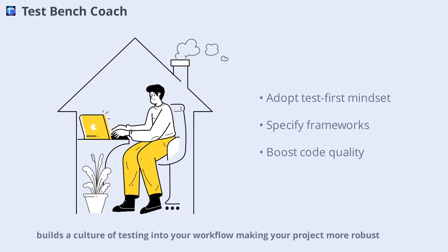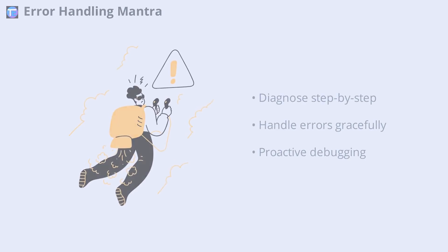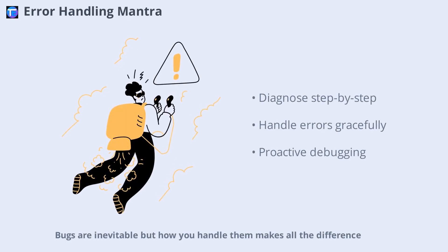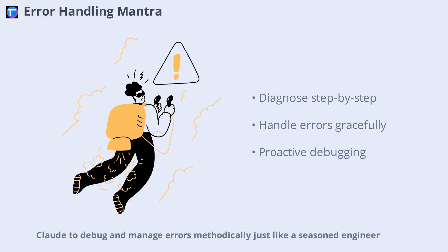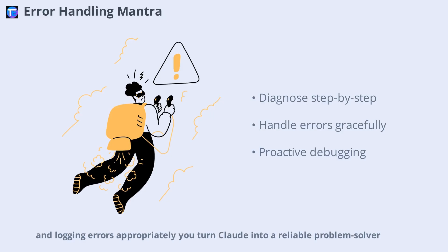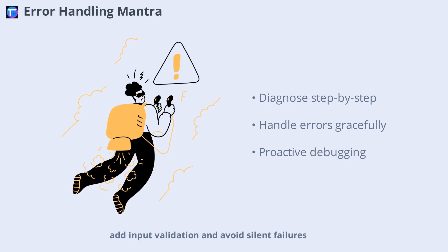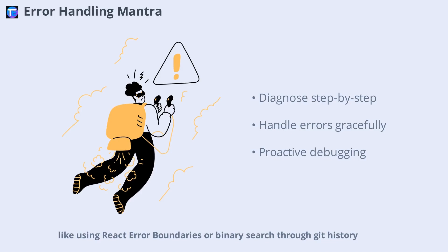Bugs are inevitable, but how you handle them makes all the difference. The Error Handling Mantra entry teaches Claude to debug and manage errors methodically, just like a seasoned engineer. By outlining steps for diagnosing issues, handling exceptions gracefully, and logging errors appropriately, you turn Claude into a reliable problem solver. After adding this mantra, I saw Claude proactively suggest fixes, add input validation, and avoid silent failures. You can even include advanced strategies like using React Error Boundaries or binary search through git history.